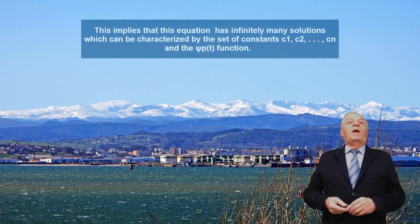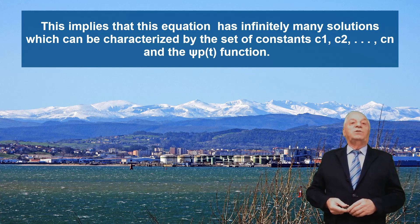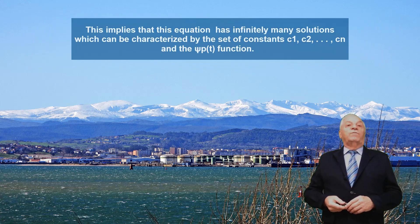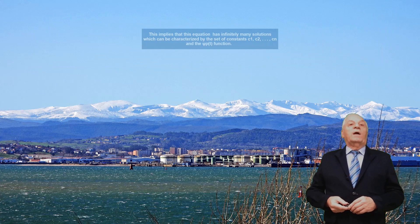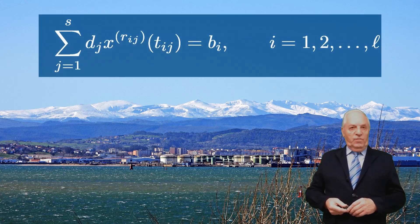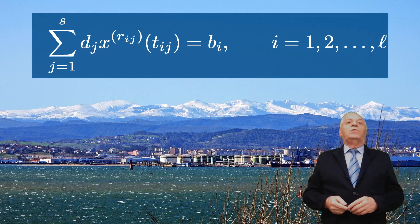This implies that one has infinitely many solutions, which can be characterized by the set of constants C1, C2, ..., Cn and the particular solution Cp(t). In order to reduce this set of solutions, one can consider the extra linear set of conditions in this formula, where dj belongs to R for j equal to 1 to S.